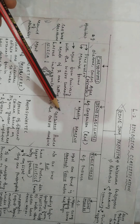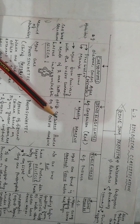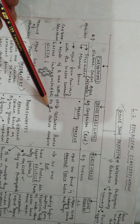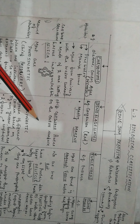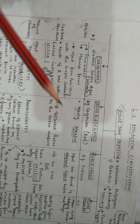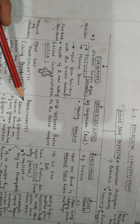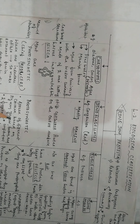Dinoflagellates are mostly marine, with stiff cellulose plates on the outer surface. They are photosynthetic and appear in different colors based on their pigments.